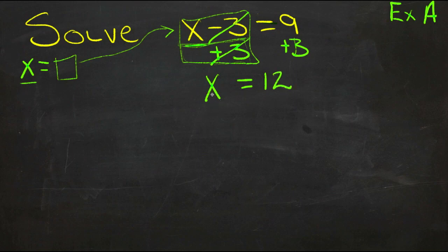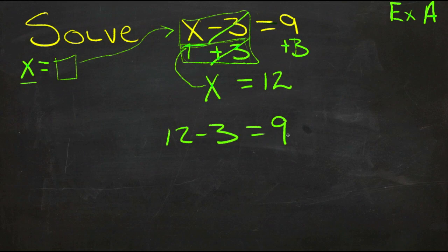So now we know that the number we could plug in in place of x up here, that would make the statement true, is 12. And we can see that, if we put 12 in, we'd get 12 minus 3, instead of x minus 3, equals 9. And since 12 minus 3 does equal 9, we know that this answer is correct.